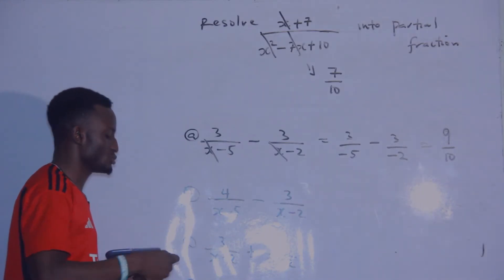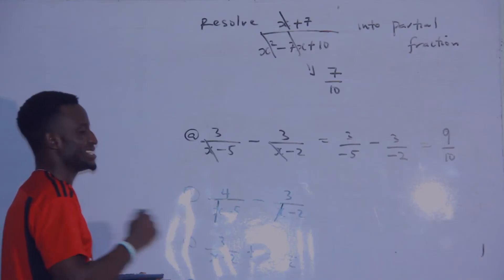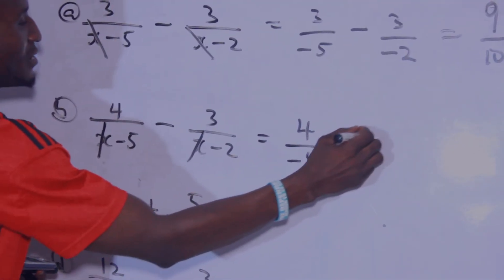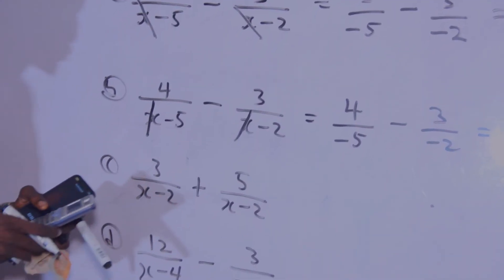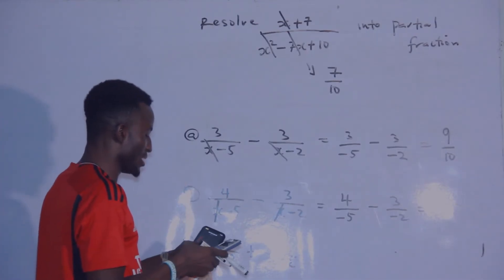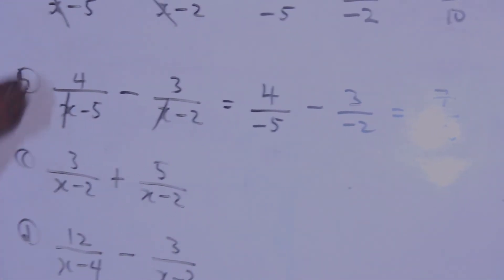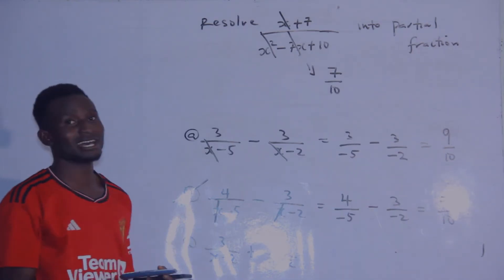Let's come to option B. Cancel x and anything attached with x — the remaining values are 4 over negative 5, minus 3 over negative 2. Pressing this on the calculator: 4 over negative 5, then minus 3 over negative 2 gives 7 over 10. So this is my right answer. You can verify this using the hand method and you arrive at the same answer.